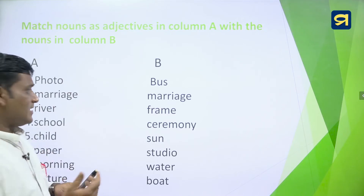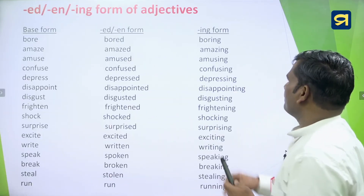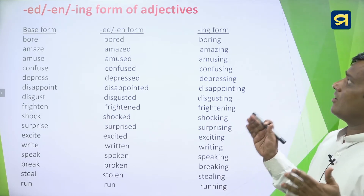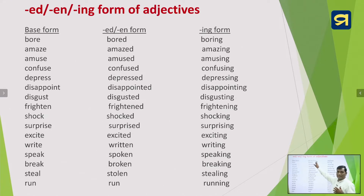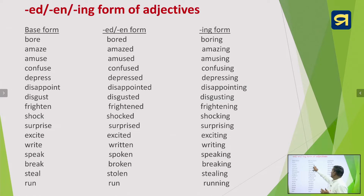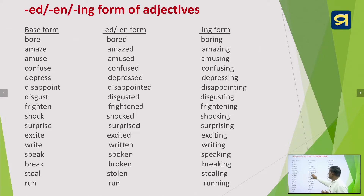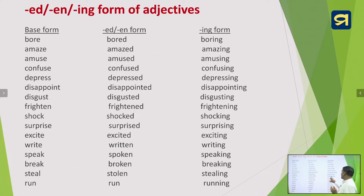Now look at the ED, EN, and ING forms of adjectives. Here are the word pairs: bored/boring, amused/amusing, confused/confusing, depressed/depressing, disappointed/disappointing, disgusted/disgusting, frightened/frightening, shocked/shocking, surprised/surprising, excited/exciting. Also: written/writing, spoken/speaking, broken/breaking, stolen/stealing, run/running. These are the ED or EN forms and the ING forms of adjectives.